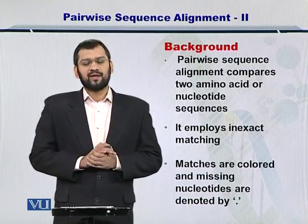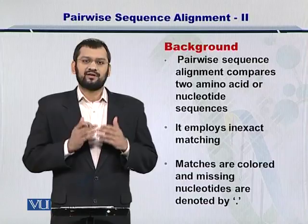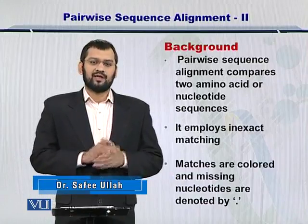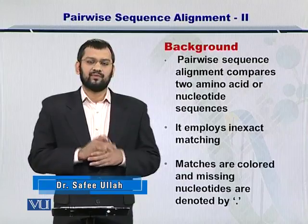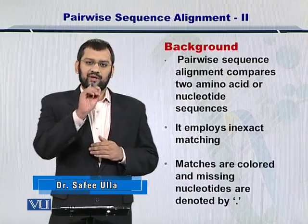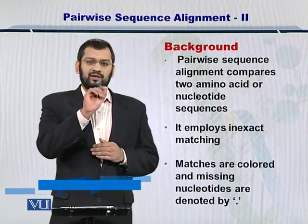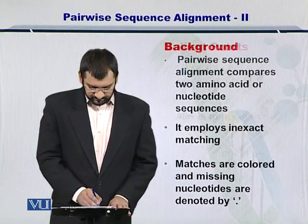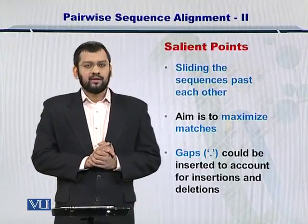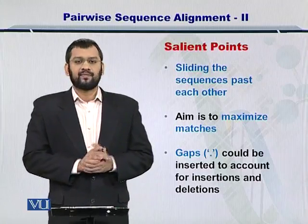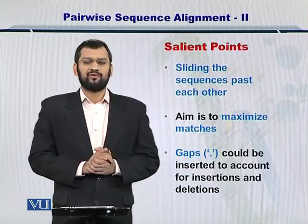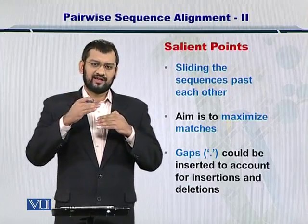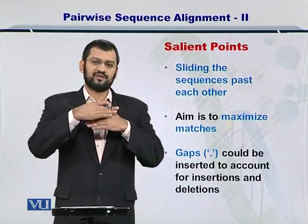In the inexact matching process, we consider some differences between the sequences. If there is an insertion or a deletion within the two sequences, then we can create a dot in the alignment, which is called a gap. The process starts with sliding the two sequences against each other.